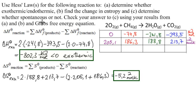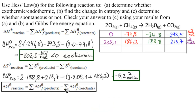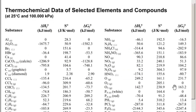Determine whether it's spontaneous or not. We need the change in free energy of the reaction, using the third form of Hess's law: the change in free energy at standard state of the reaction is the sum of the change in free energy of formation of the products minus that of the reactants. As with enthalpy, the change in free energy of an element in its formation is zero. O2: ΔGf° is in fact zero.